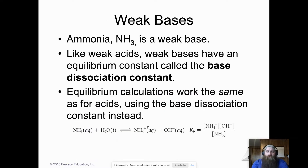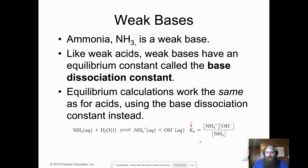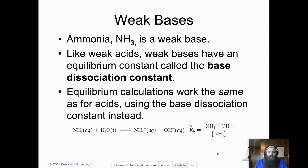Weak bases are things that don't dissociate all the way. Just like we have a Ka, we can also have a Kb, called the base dissociation constant. You calculate the equilibrium the exact same way as for acids. Water is left out as a pure substance, and we have products on top and reactants on the bottom.